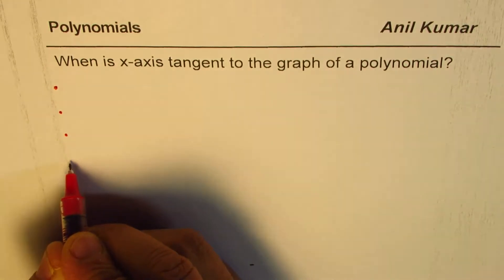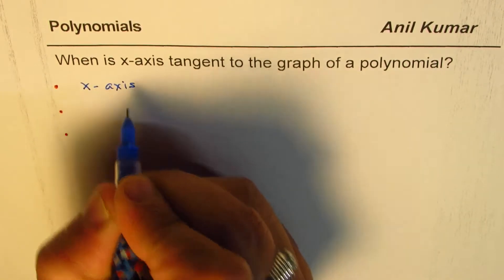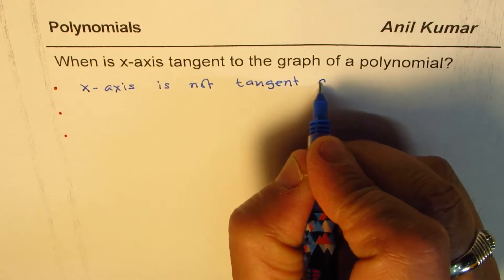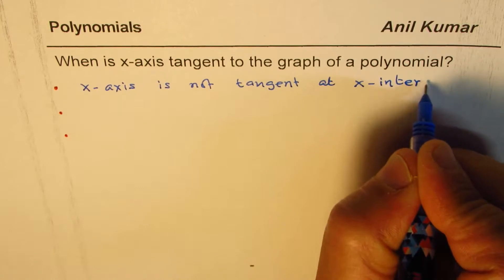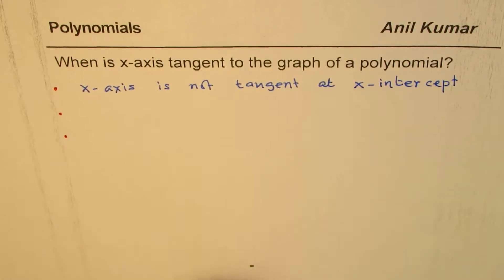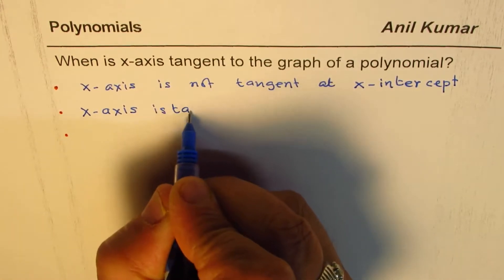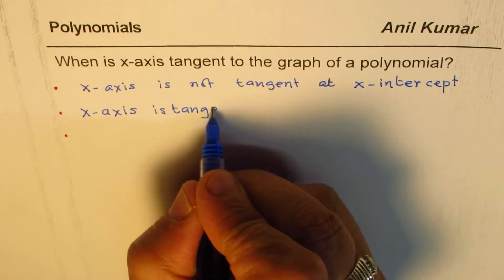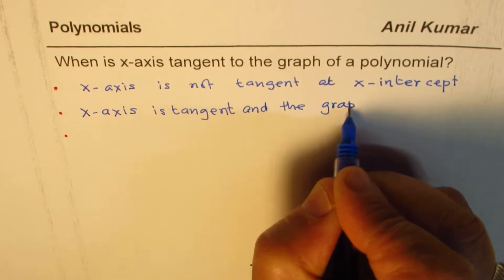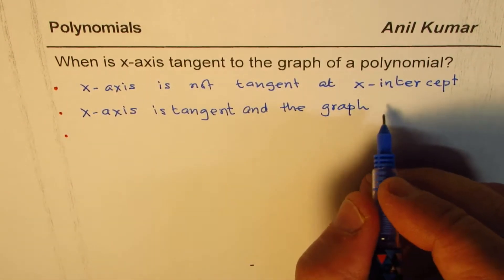So the first combination is that the x-axis is not tangent at the x-intercept. We are talking about zeros but x-axis is not tangent at the x-intercept. The second combination is that x-axis is tangent to the graph of the polynomial, and the graph bounces.